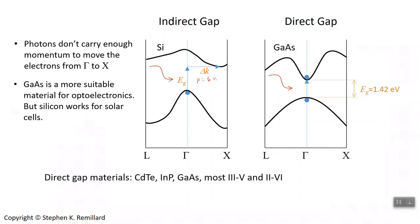So let's talk about direct gap materials first. Here's a short list: cadmium telluride, indium phosphide, gallium arsenide. And basically, most 3-5 and 2-6 compounds have direct gaps. Not all, but most have direct gaps.